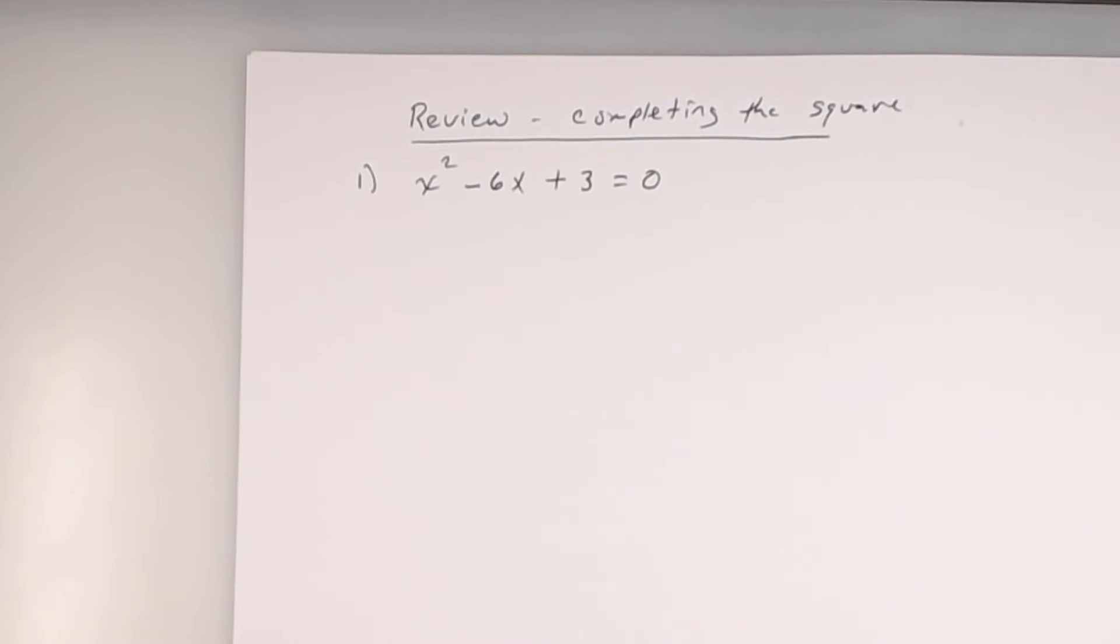Alright, x squared minus 6x plus 3 equals 0. Now remember, always read the direction. The direction said to do what? Complete the square. It said you split out a formula, and this is not factored anyway, so you could never have factored this. So make sure you're using completing the square and not the quadratic formula.